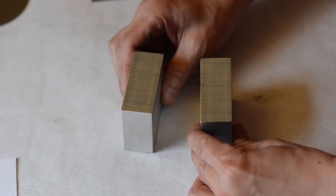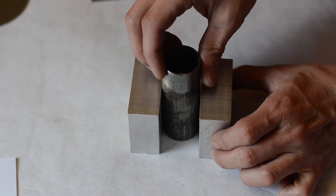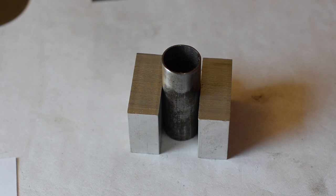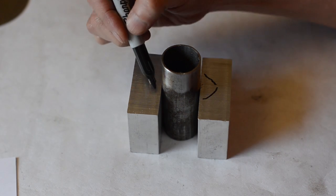Alright, so now I need to make a fixture to hold the tubes that gets clamped into the mini lathe. So that's what I'm doing now.